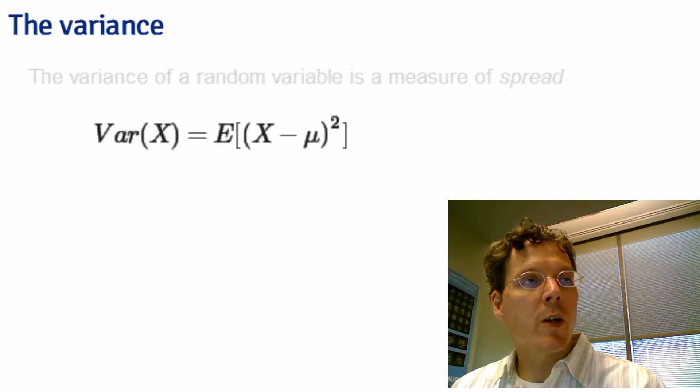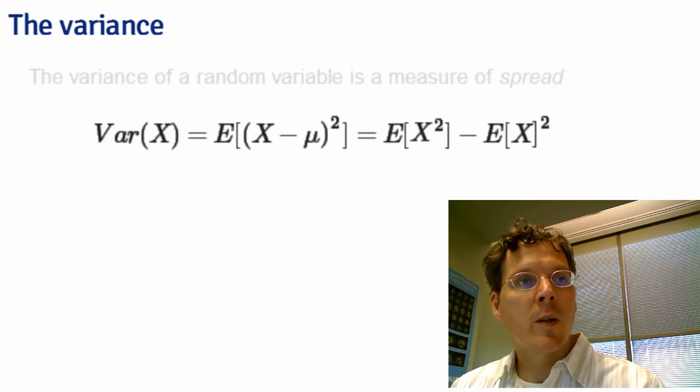If X is a random variable that has mean mu, the variance is exactly the expected squared distance the random variable is from the mean, and I give the formula here. There's a nice shortcut: the expected value of X squared minus the expected value of X quantity squared.